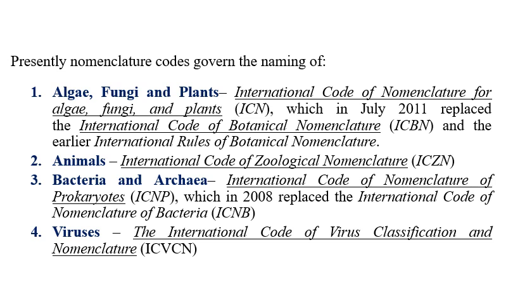For bacteria and archaea, which are prokaryotes, naming is governed by ICNP — the International Code of Nomenclature of Prokaryotes — which was replaced by ICNB, the International Code of Nomenclature of Bacteria, in 2008. For viruses, the International Code of Nomenclature of Viruses, or ICNV, was established in 1966 and was replaced by ICTV — the International Code of Taxonomy of Viruses — in 1973.